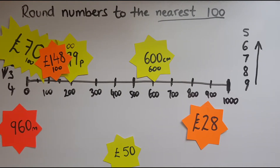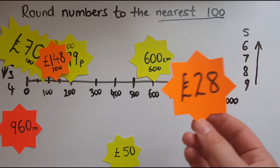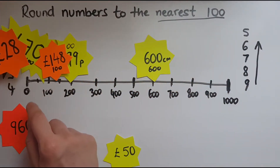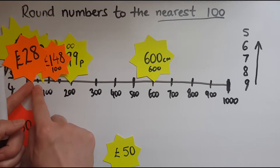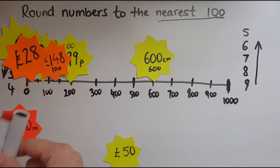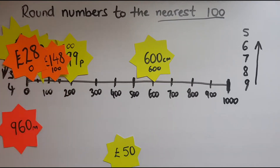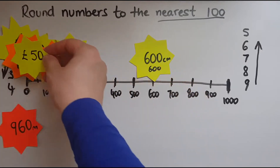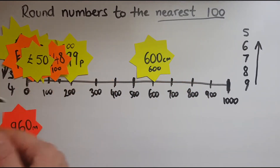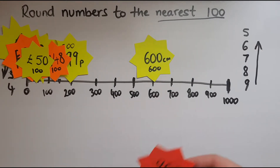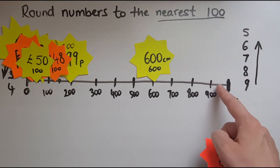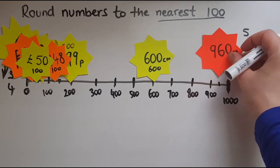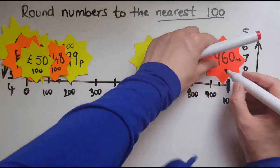Now we'll look at 28. 28 is closer to 0, not to 50, which is the point where you'd round up to 100. So that's rounded to 0 to the nearest 100. And 50 is right in the middle, so that means we round up — we go to 100. And 960: that's between 900 and 1000, with 950 right in the middle. Since 960 is more than 950, we'll round it to 1000.